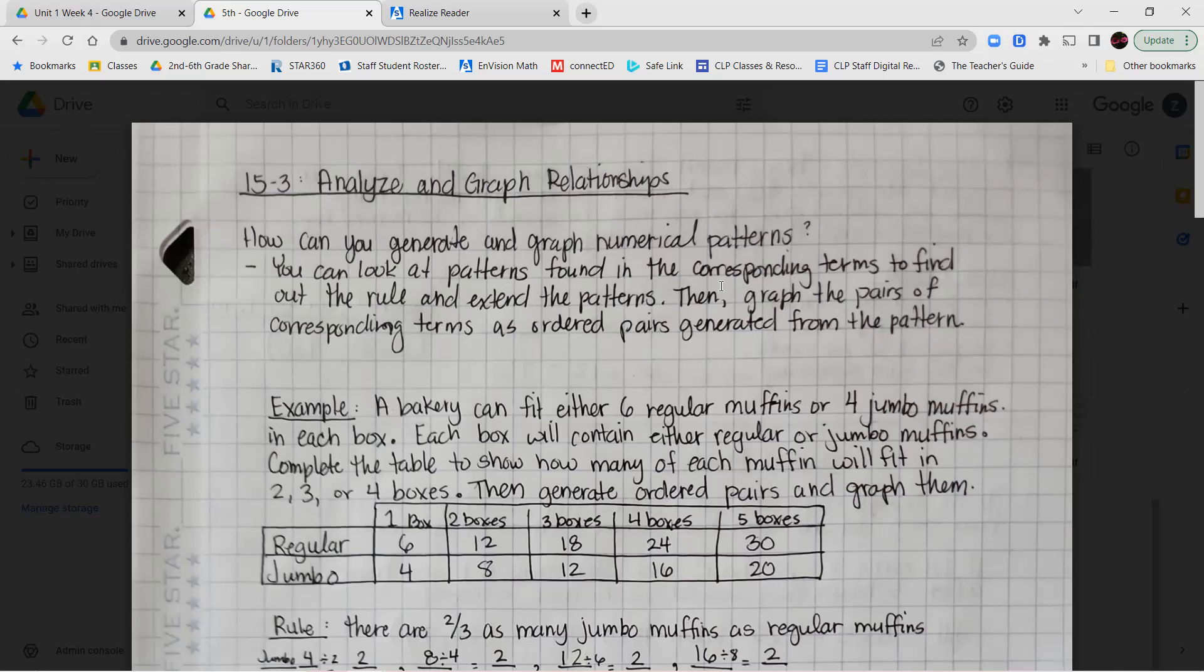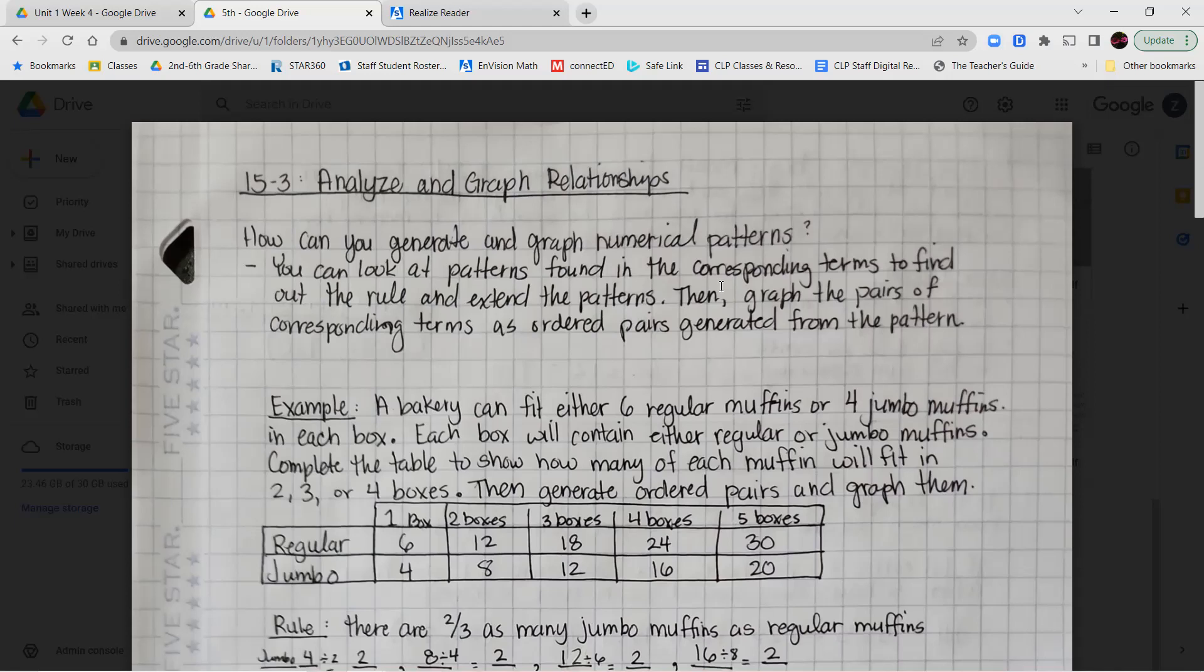So what does that mean? That means you're going to use the rule and you're going to follow it until you get as far as you need to get. Then after you've done that, you're going to take the numbers that you generated, that you made following this pattern and following this rule, and you're going to use those as your x and y coordinates to graph them on a coordinate grid.